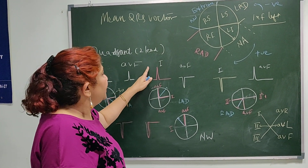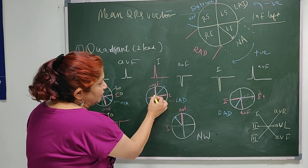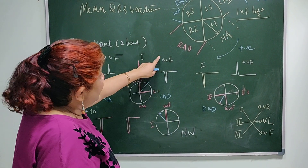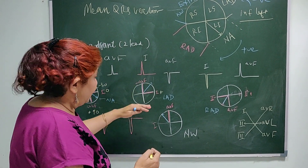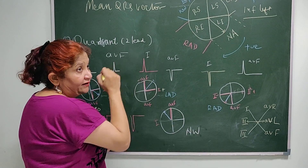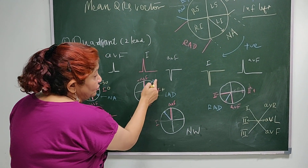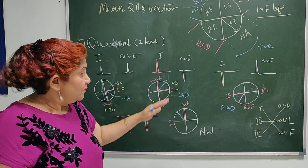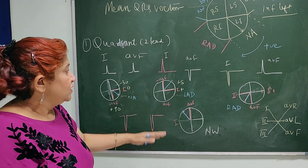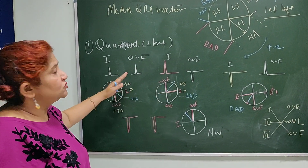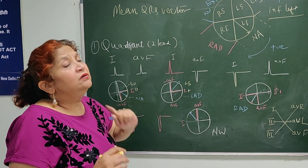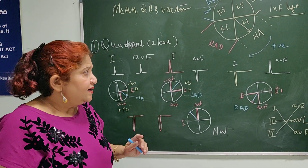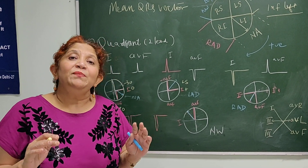In a second situation, Lead 1 is positive but AVF is negative — meaning the vector is moving away from AVF's positive pole. So the QRS falls in the left superior quadrant, indicating left axis deviation. Between 0 and minus 30 is called physiological left axis, and between minus 30 and minus 90 is pathological left axis deviation. The quadrant method cannot differentiate between physiological and pathological left axis deviation.